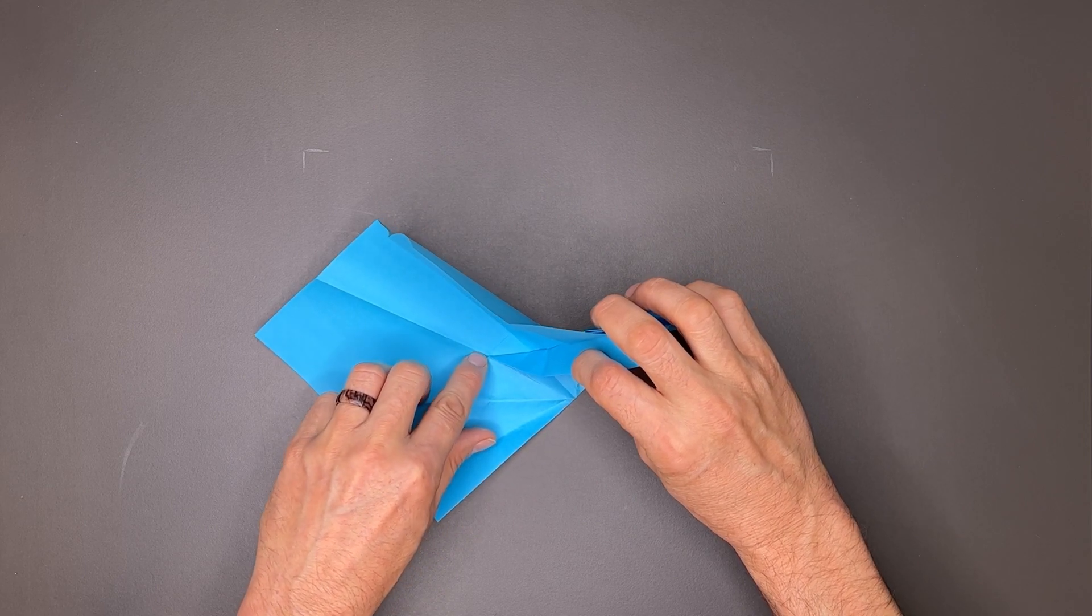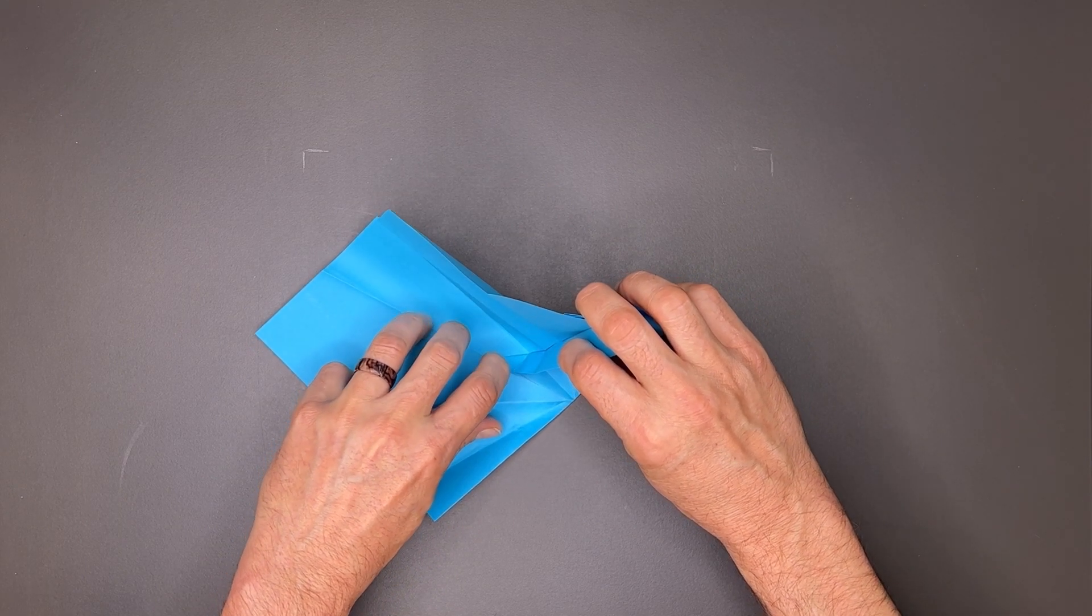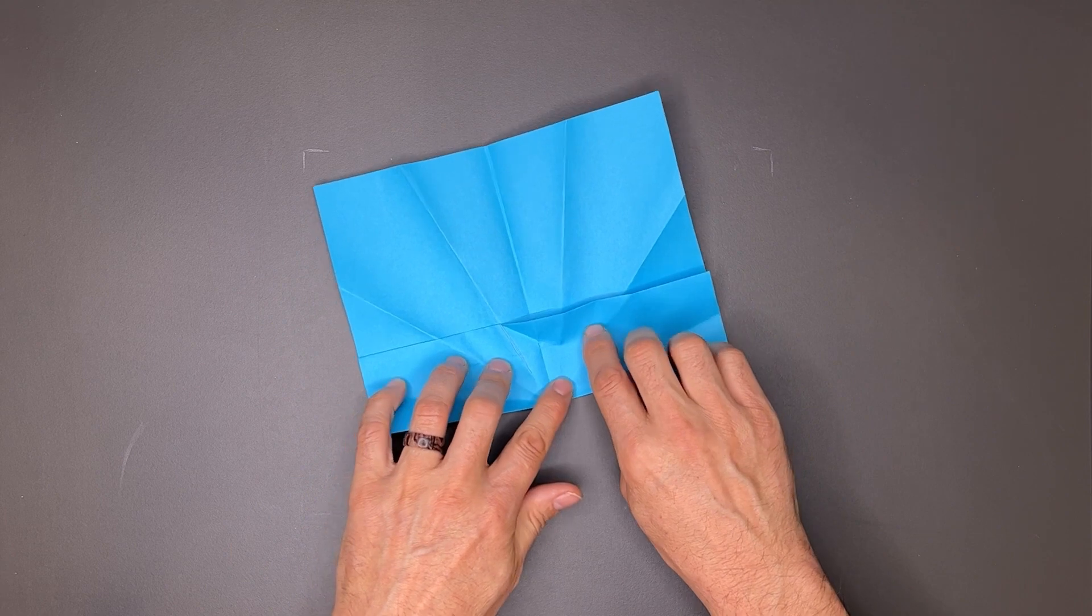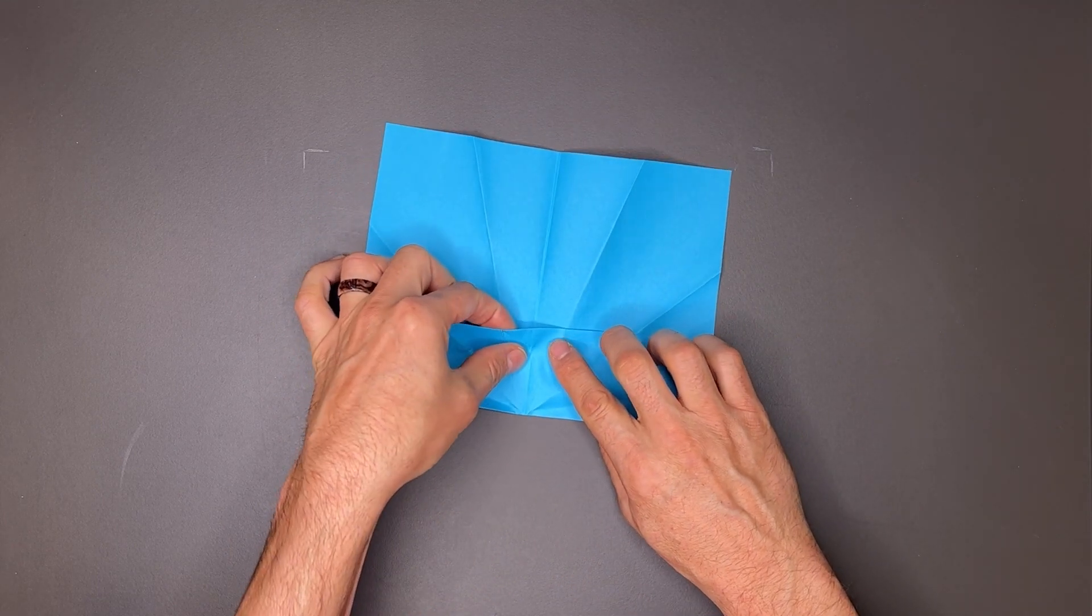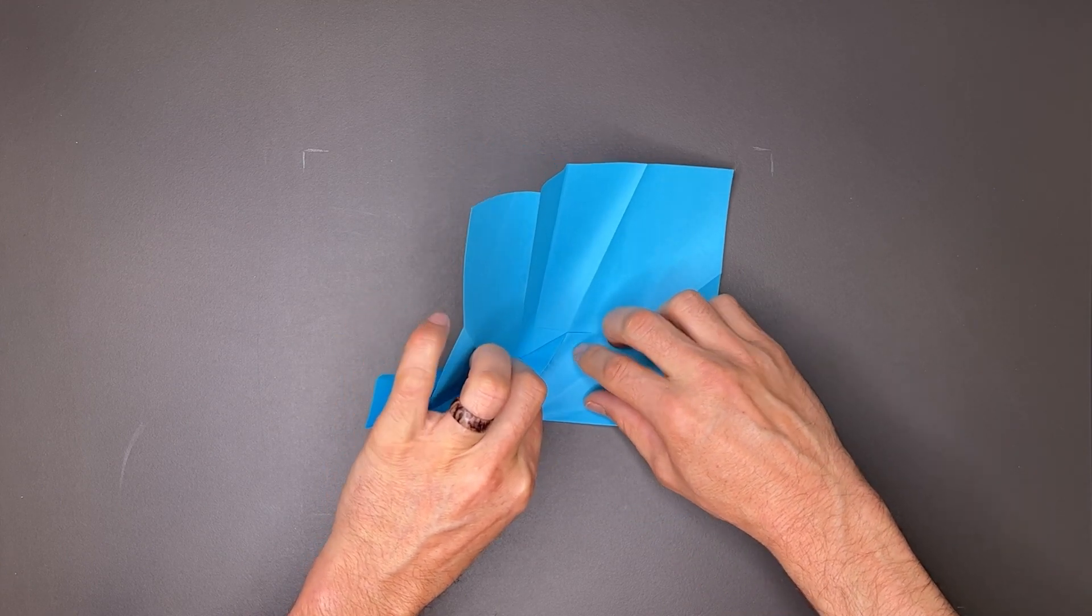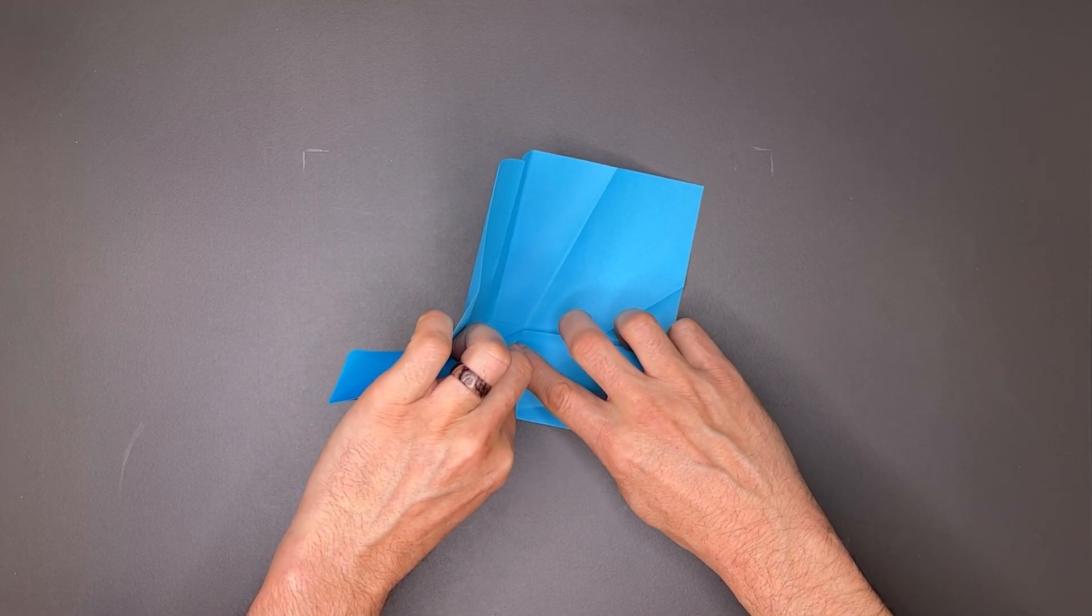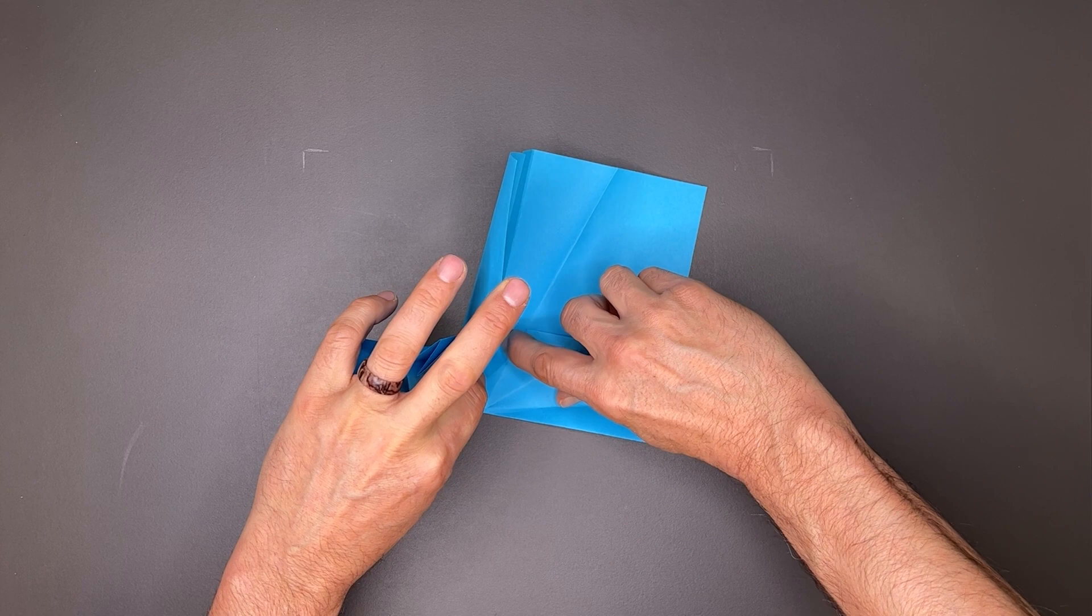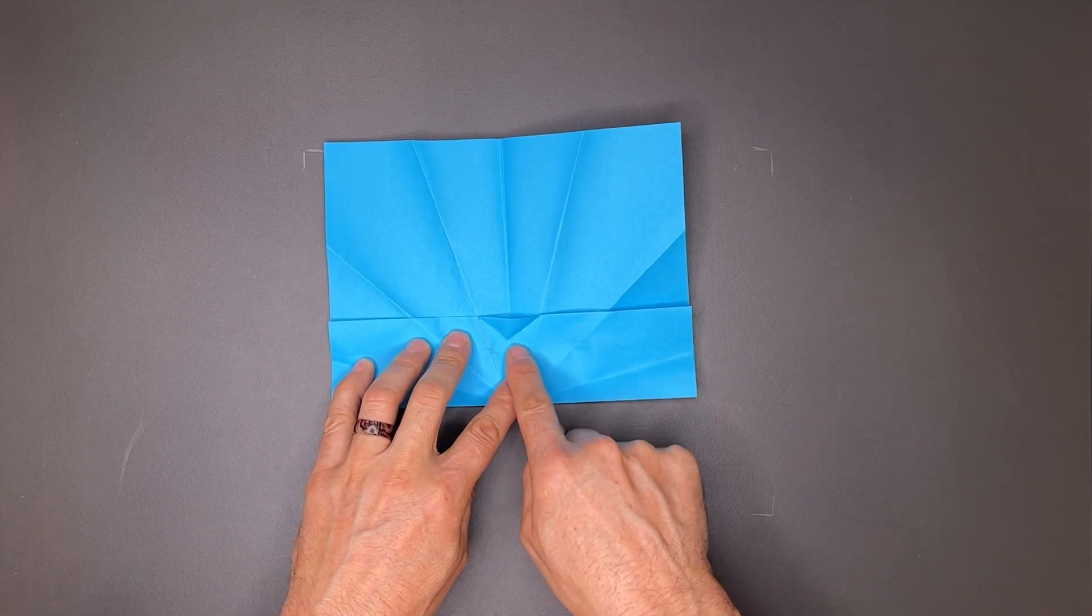And then I want to crease from this edge to center, no further. So we've made this nice diagonal line, and then I'll do the same thing on this side. That's the top edge here, and then just crease in. So now I have two diagonal lines here.